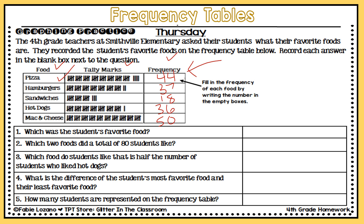Just by looking at the data I already have, I can kind of already answer some questions in my mind — I know the most favorite food and the least favorite food. Question one: which was the students' favorite food? The favorite food is the one with the highest number of students who voted for it. The highest frequency is 50, and that would be mac and cheese — so that is the students' favorite food.